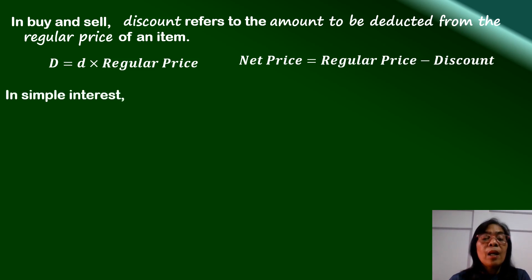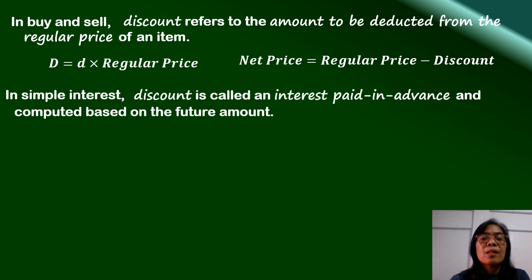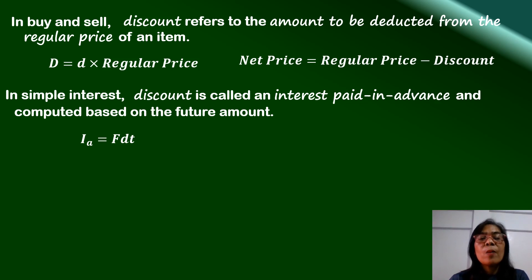In borrowing and lending money with simple interest, discount is also called interest paid in advance and is computed based on the future amount. We have: discount, or interest paid in advance, is equal to the future amount times the discount rate times the time in years the money will be used by the borrower. The proceeds of the loan is equal to the future value of the money less the discount or interest paid in advance.